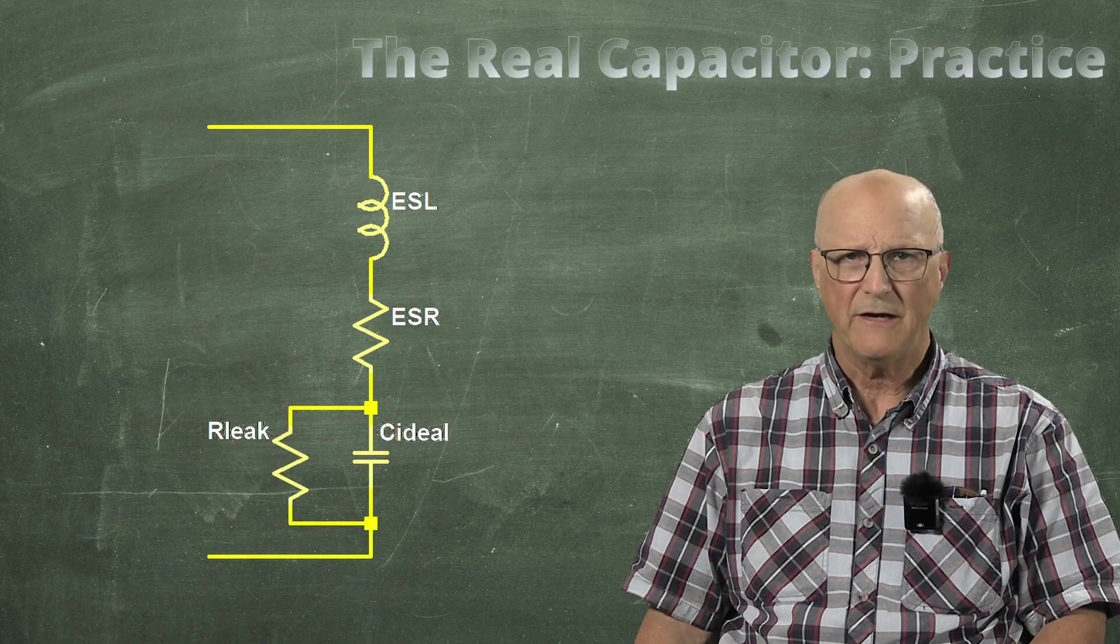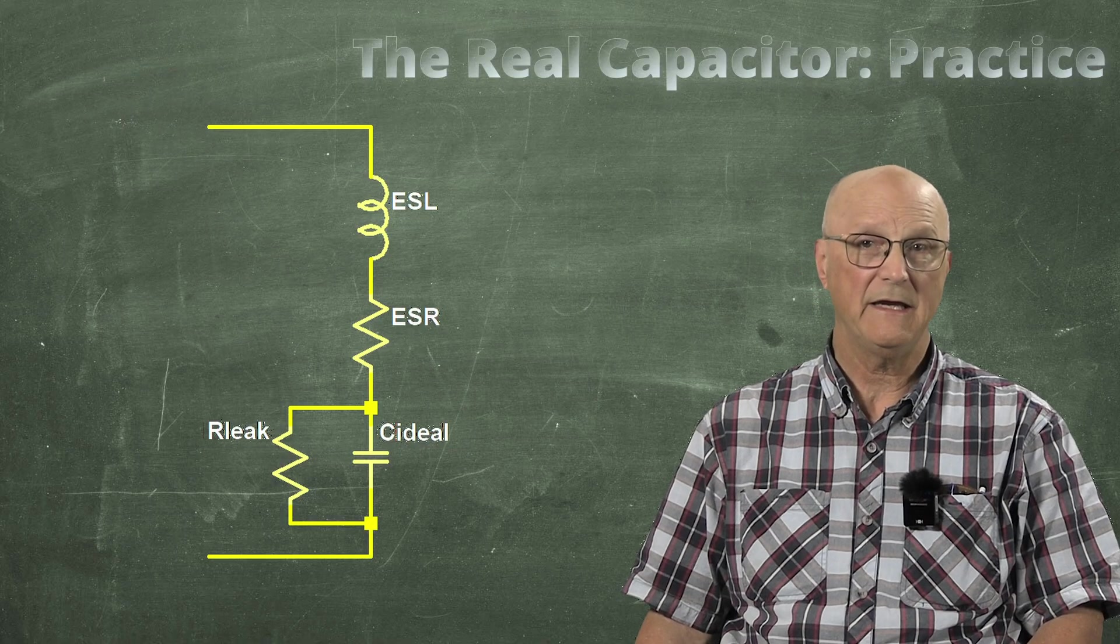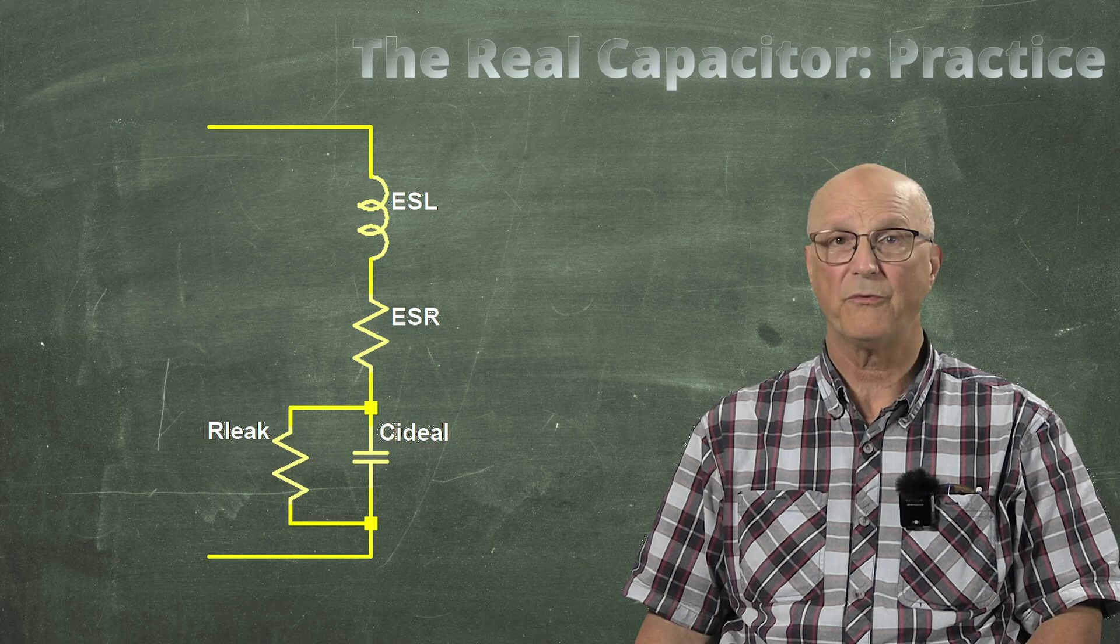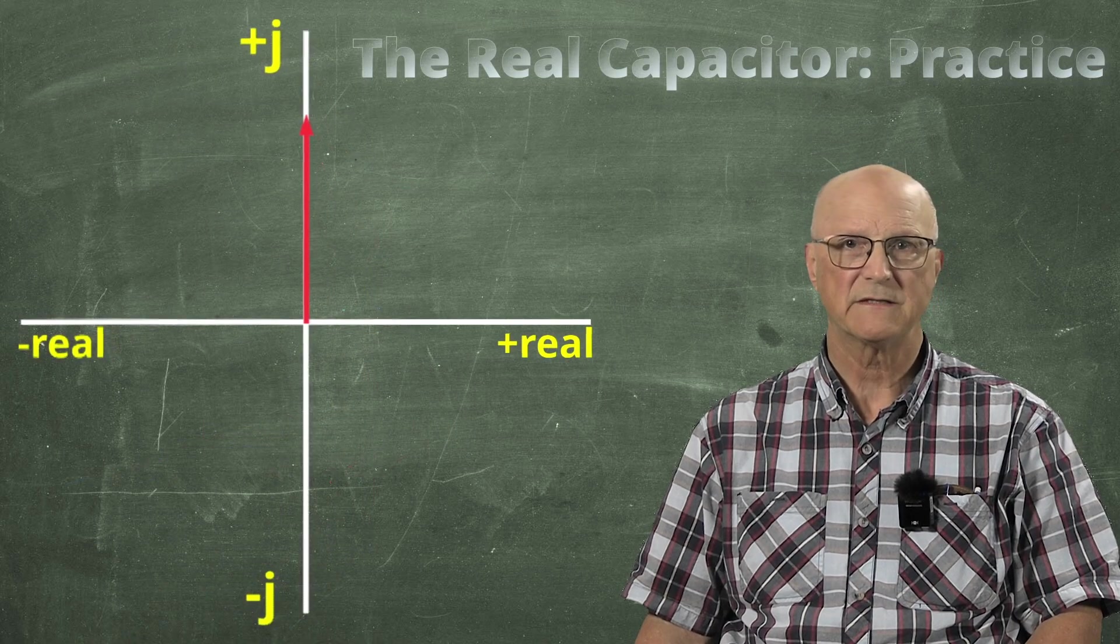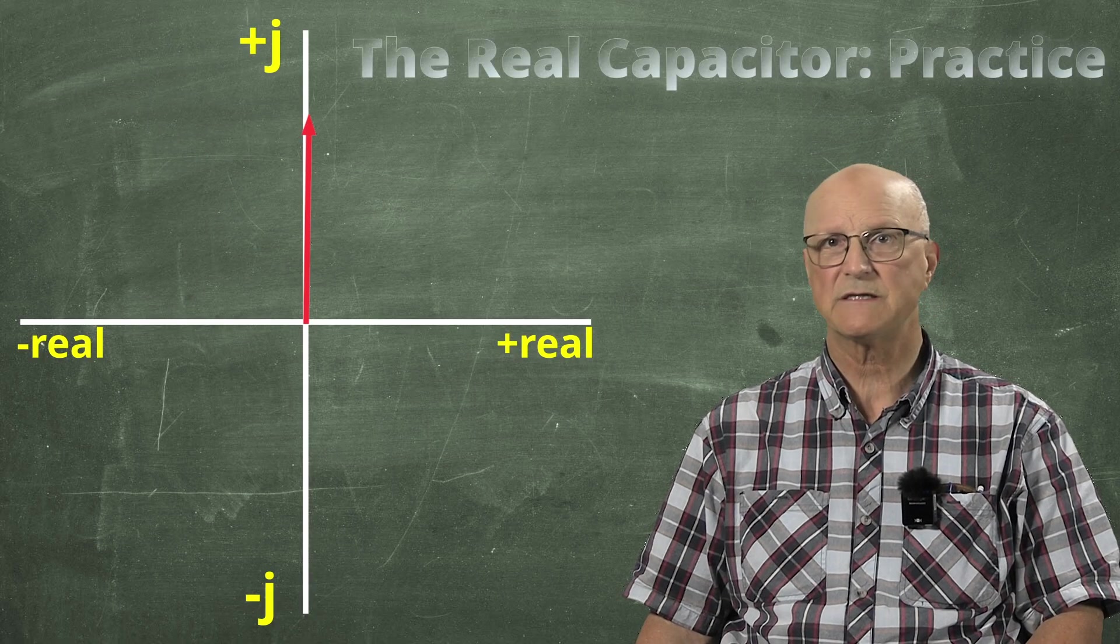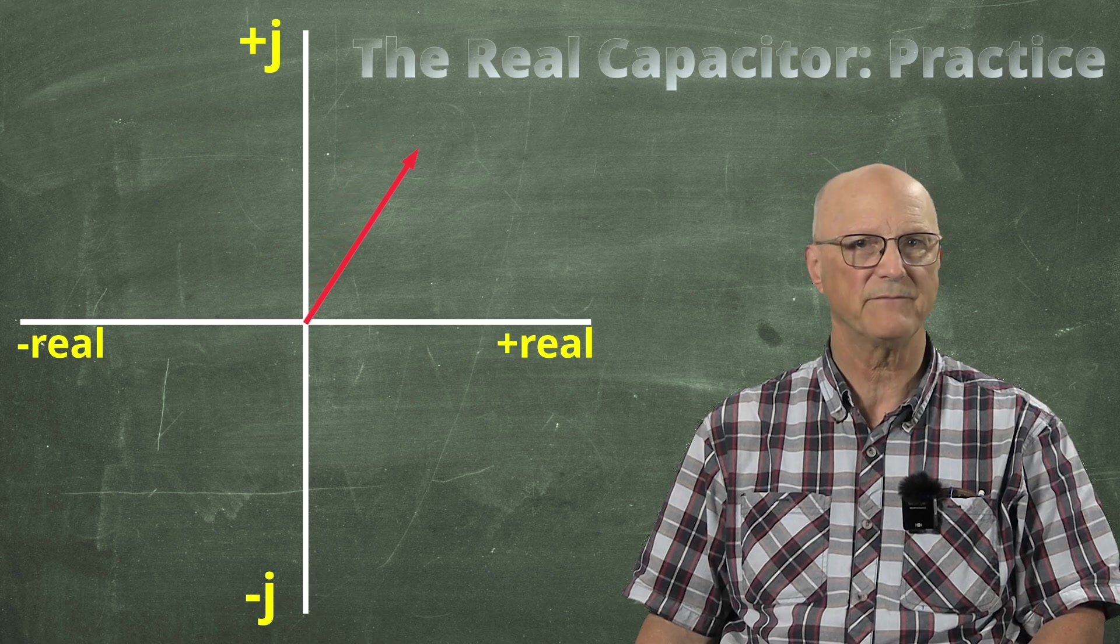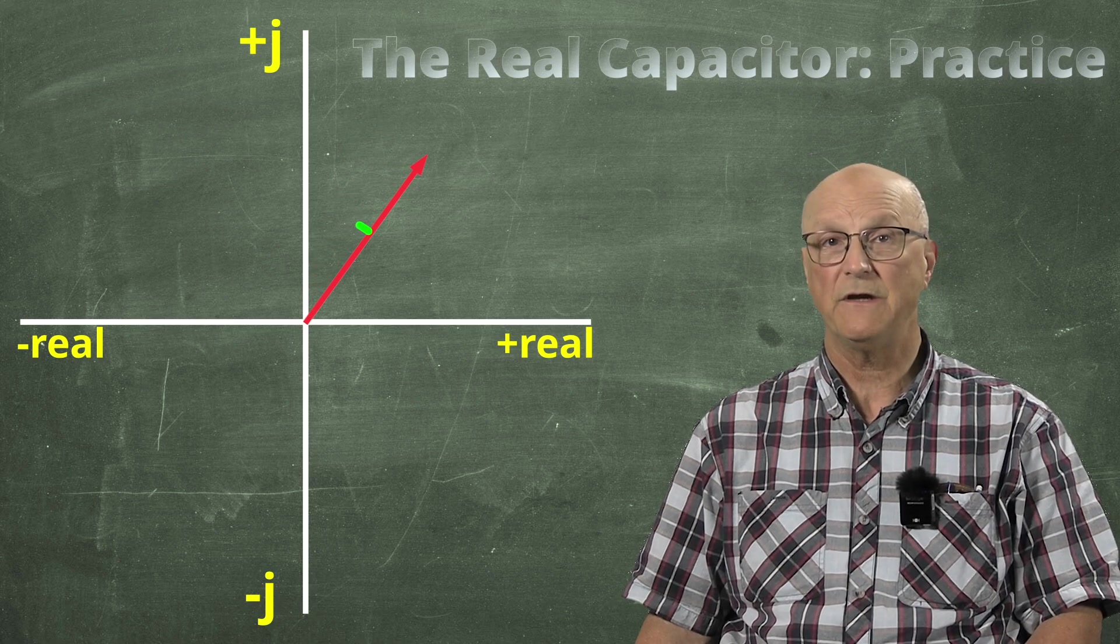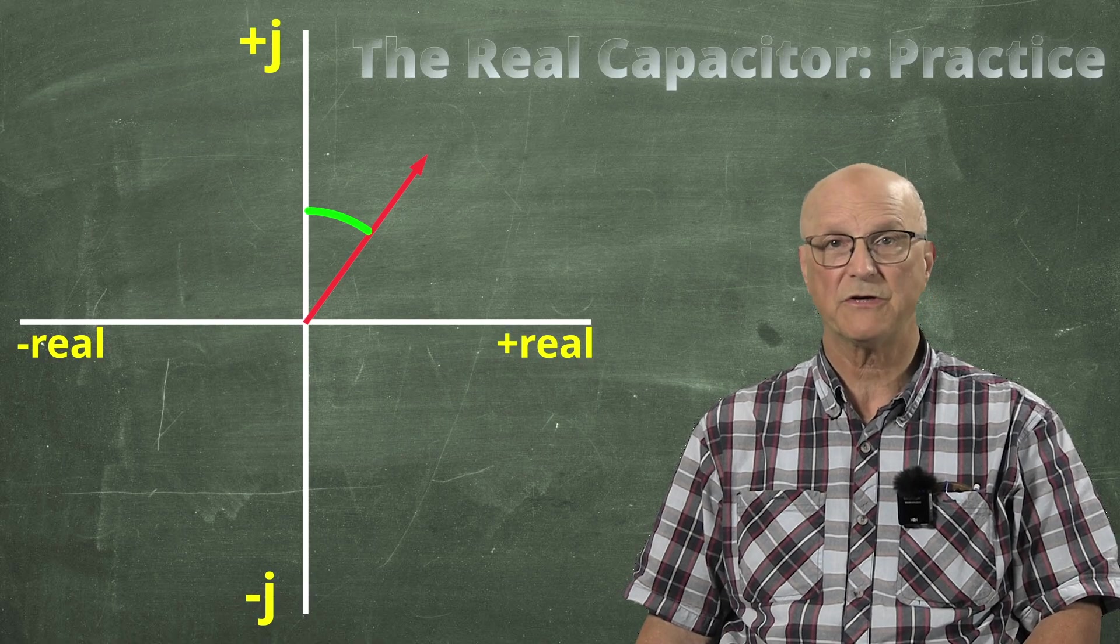The point here is that the actual current through the capacitor at any given frequency is comprised of both reactive and real components. This means that the vector that represents this current resides somewhere in the first quadrant of our Cartesian coordinate system. It has a definitive angle with respect to the reactive or imaginary axis.